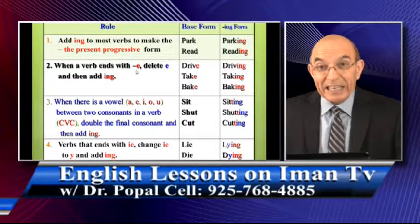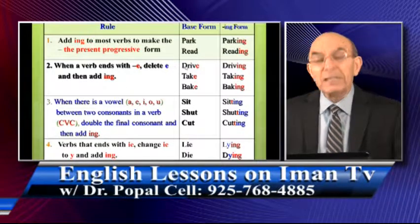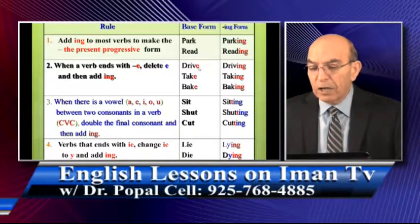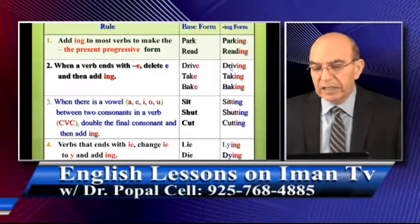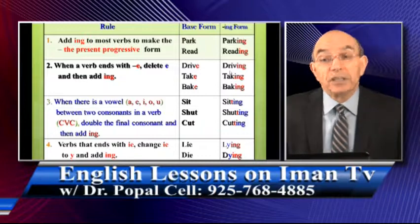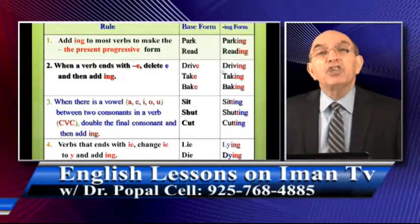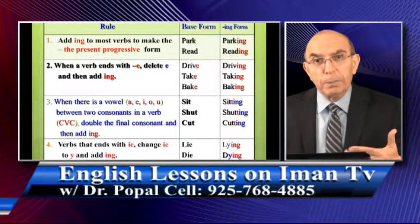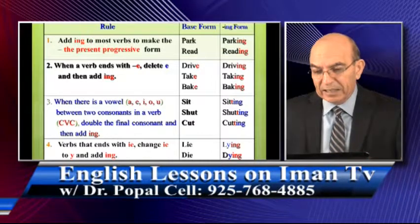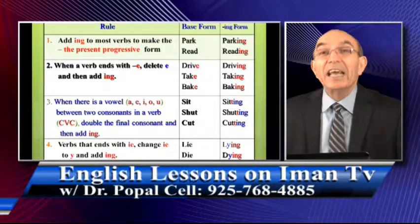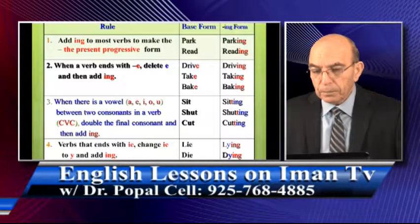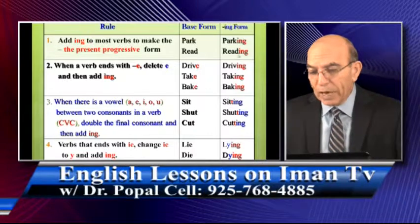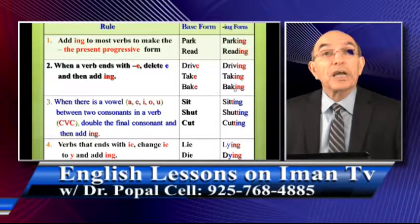Rule number two: when a verb ends with 'e,' delete the 'e' and then add '-ing.' For example, 'drive' — when you write it in the present form it has an 'e,' but when you add '-ing,' you delete the 'e.' So you say 'driving.' The 'e' is not there. If you put the 'e' in '-ing,' it's wrong — it's not correct spelling. 'Take' becomes 'taking' — the 'e' disappears. 'Bake' becomes 'baking.' When you add '-ing,' there is no 'e.'